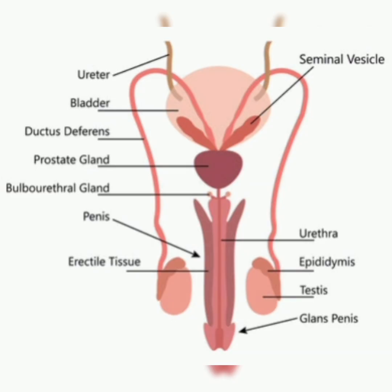The urethra is the tube that carries urine from the bladder and also ejaculates semen during orgasm. The seminal vesicles are sac-like pouches that produce about 80 percent of the ejaculatory fluid, including fructose which provides energy for sperm motility.